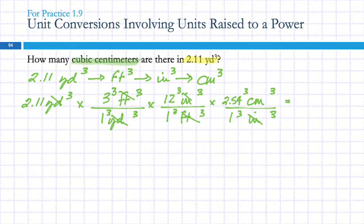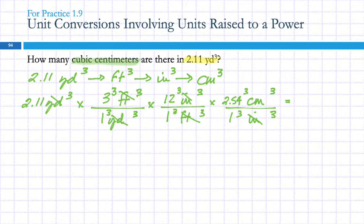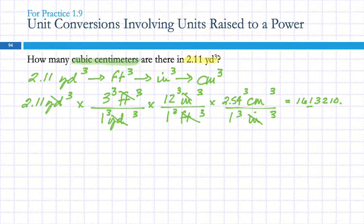On the calculator: 2.11 times 3³, times 12³, times 2.54³. We get a big number. How many sig figs should the answer have? Three. Writing in scientific notation: the decimal point goes after the first digit. The result is 1.61 × 10⁶ — looking at the next digit (3), I don't round up. So the answer is 1.61 × 10⁶ cubic centimeters.